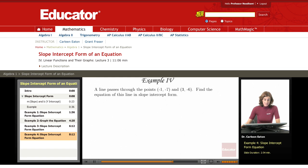Okay, in example 4, a line passes through the points (-1, -7) and (3, -6). Find the equation of this line in slope-intercept form.